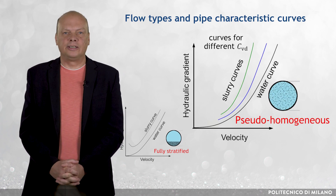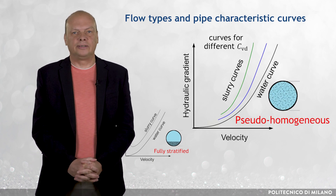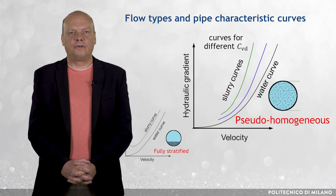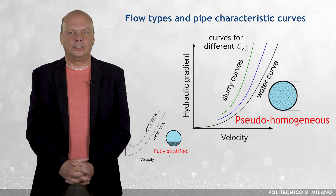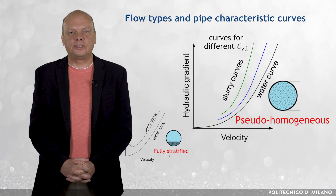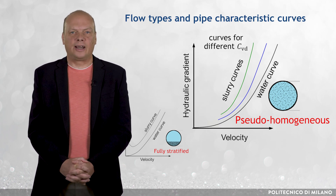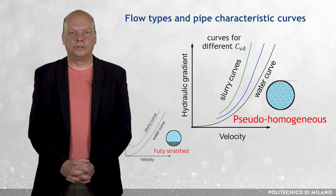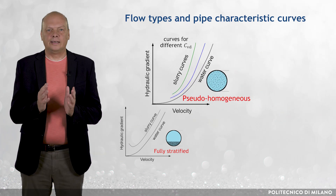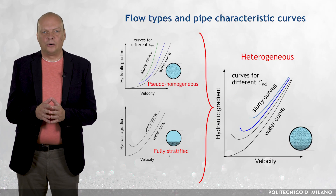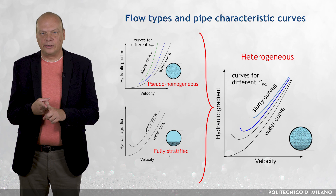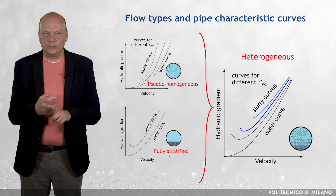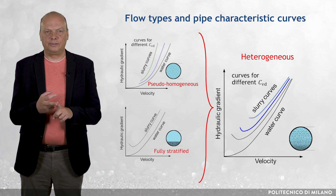The other limiting case is represented by the behavior found for fine dense slurries, known as pseudo-homogeneous flow, for which the particles are carried by the fluid rather than by intergranule contacts. The intermediate case is known as heterogeneous flow, for which both intergranule contact and fluid support mechanisms are significant.